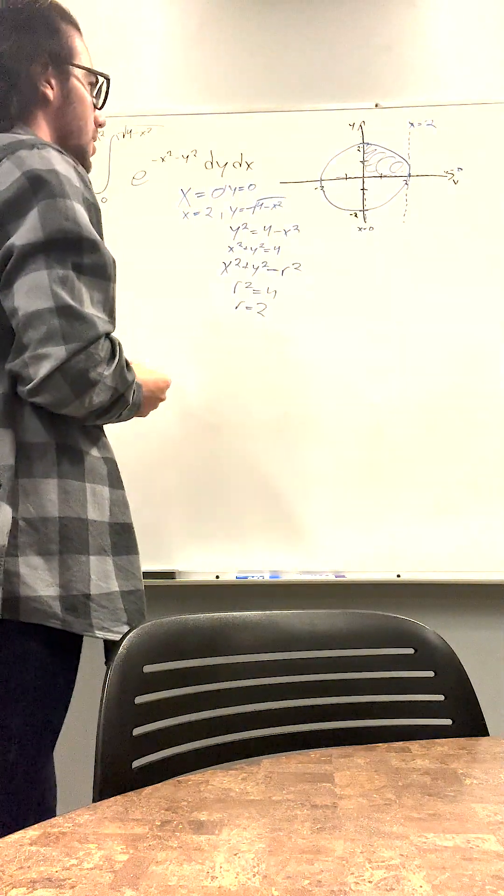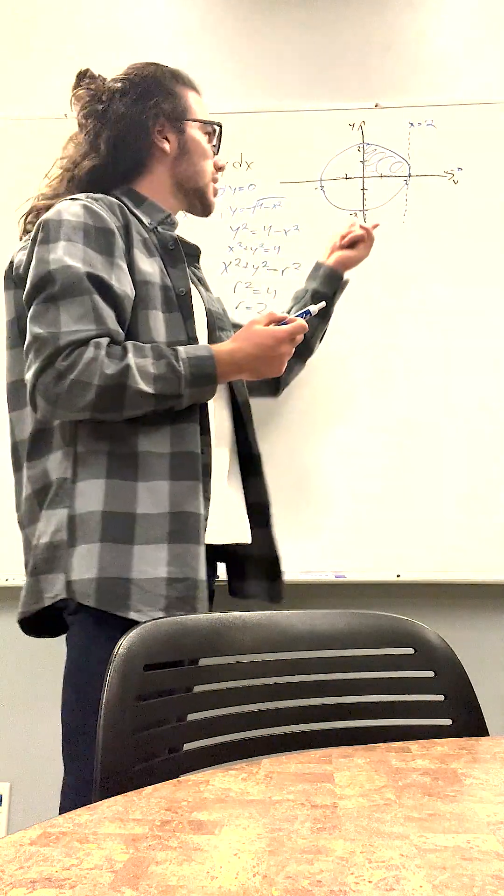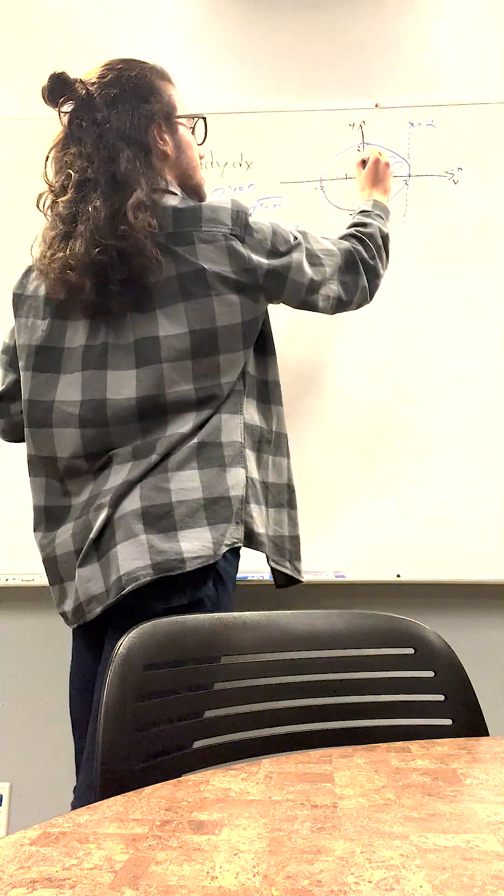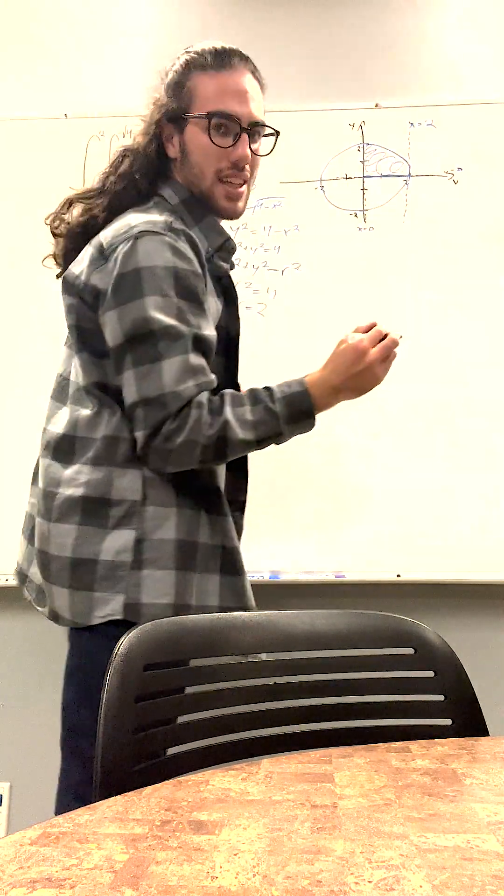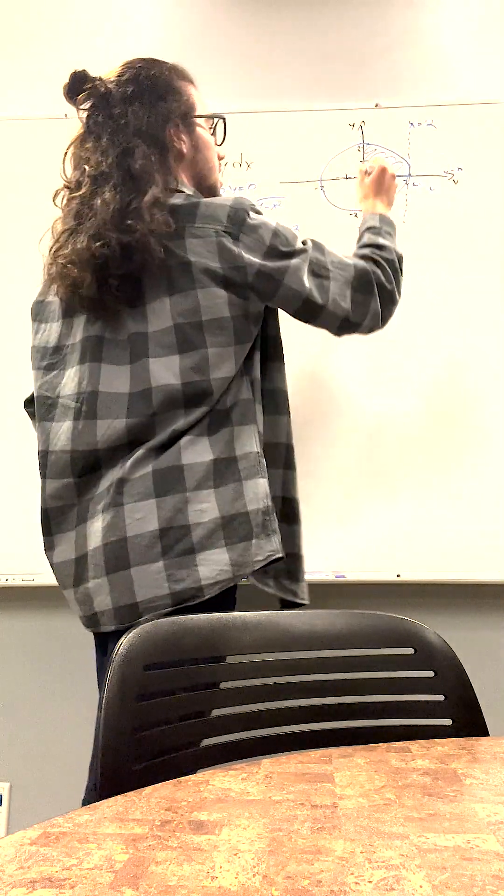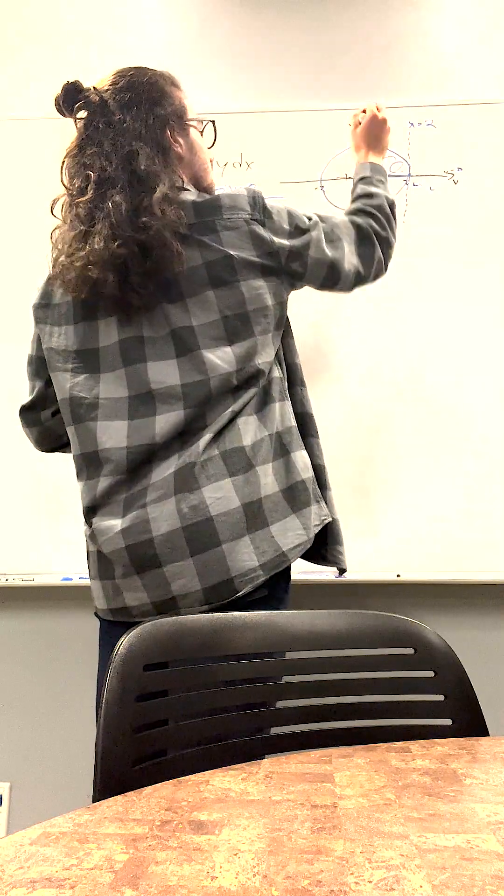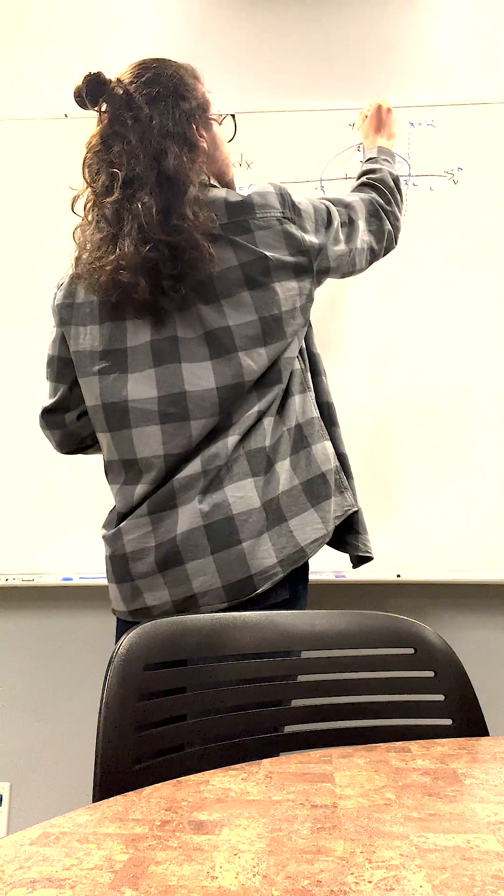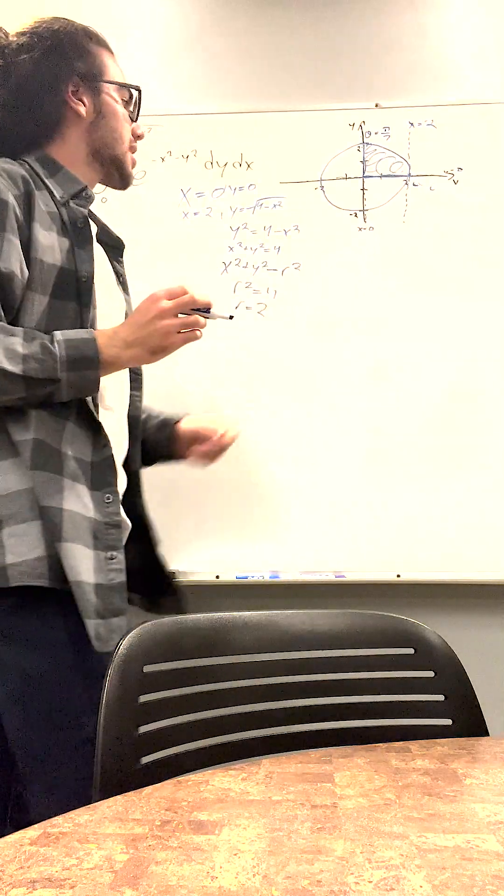And also we want to find what our thetas are. So here, it starts here basically along this line. The theta of this is 0 obviously. And then it goes to this line. The theta of that is pi over 2.